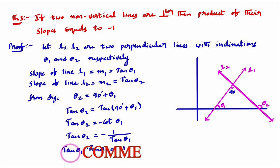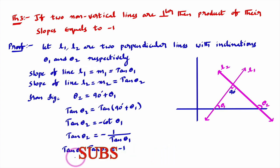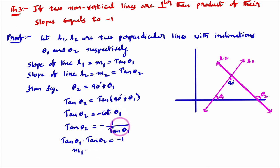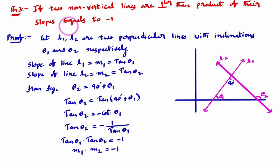Since tan θ1 is the slope of line L1 (that is M1) and tan θ2 is the slope of line L2 (that is M2), we get M1 · M2 = −1. This proves that if two lines are perpendicular, then the product of their slopes equals minus 1.